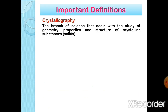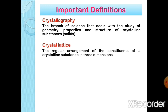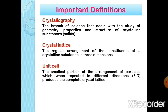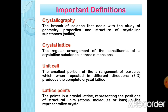Now let us know some important definitions related to solid state chemistry. Crystallography: the branch of science that deals with the study of geometry, properties, and structure of crystalline substances. Crystal lattice: the regular arrangement of the constituents of a crystalline substance in three dimensions. Unit cell: the smallest portion of the arrangement of particles which, when repeated in different directions in 3D, produces the complete crystal lattice. Lattice points: the points in a crystal lattice representing the positions of structural units, which can be atoms, molecules, or ions.